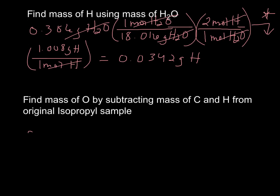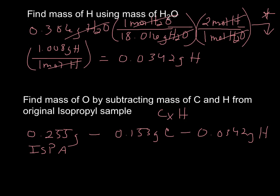So we take our original sample. If we look on the problem, it was 0.255 grams. And this is your isopropyl alcohol. I made that abbreviation out. That is not legit. Minus 0.153 grams of carbon, which is what we calculated earlier, minus what we just calculated, 0.0342 grams of hydrogen. So in that original sample, CX, HY, and OZ, that's our carbon, that's our hydrogen.